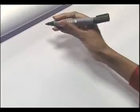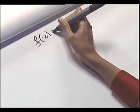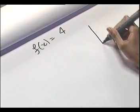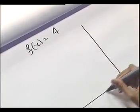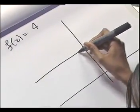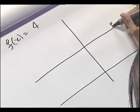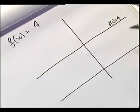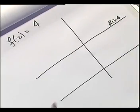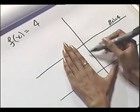There are some functions that can't have inverses even if we restrict the domain. A good example is a constant function such as f of x equals 4. The only way to get one x for each f of x would be to cut down the domain to a single point, which isn't useful. So in this case we say the function has no inverse.